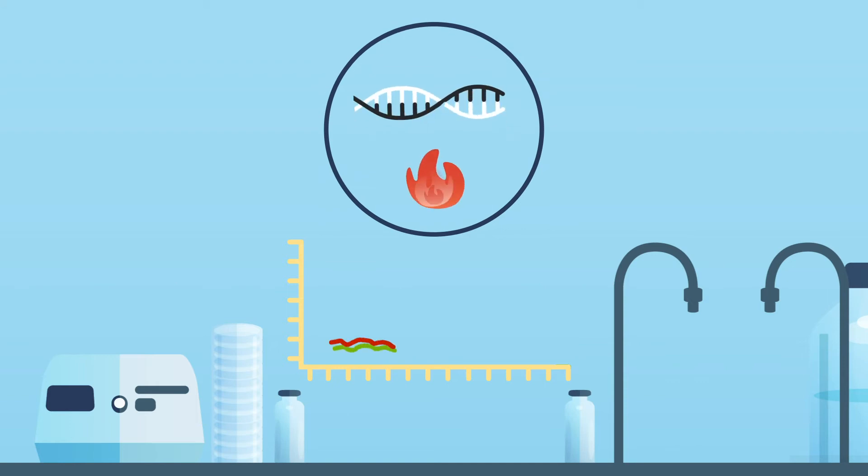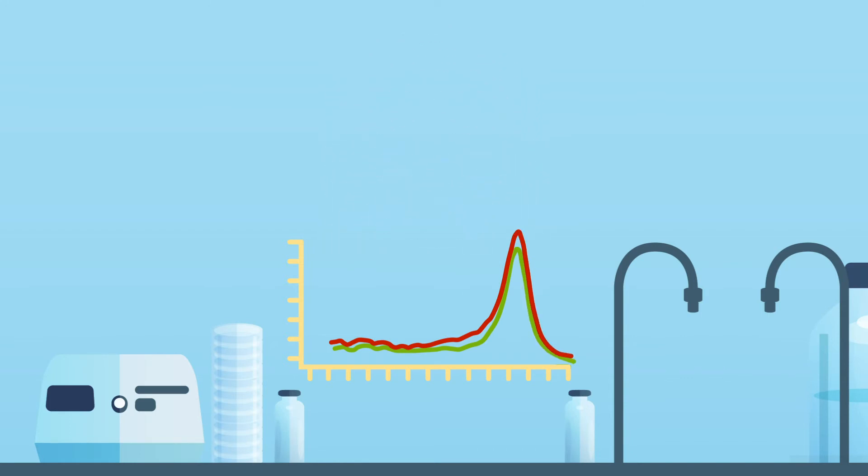The reaction is heated slowly. When the double-stranded amplicon denatures, there is a sudden change in fluorescence. This melt temperature is a function of the amplicon sequence and length.